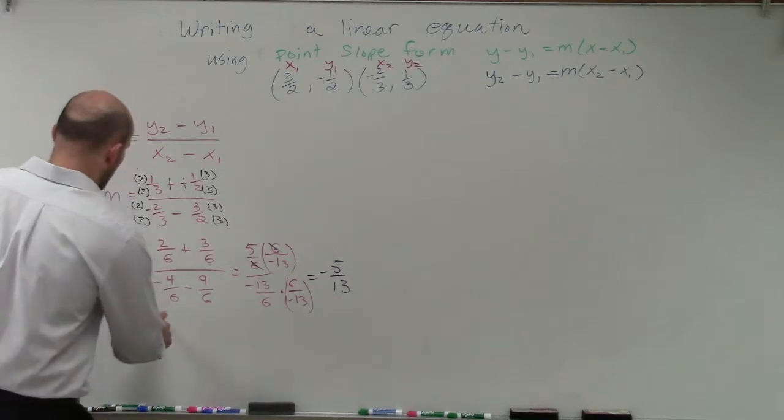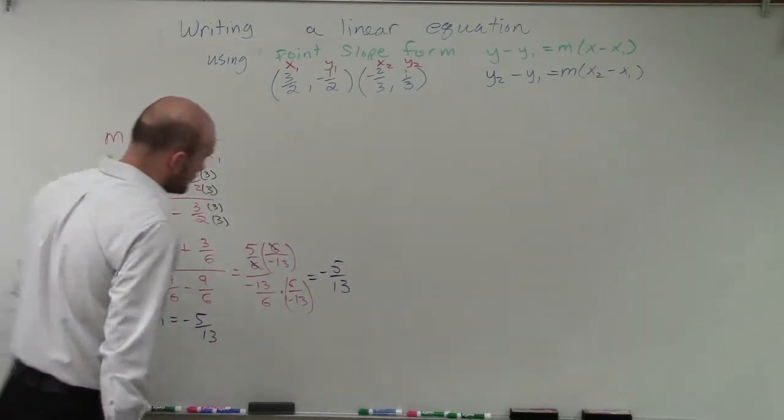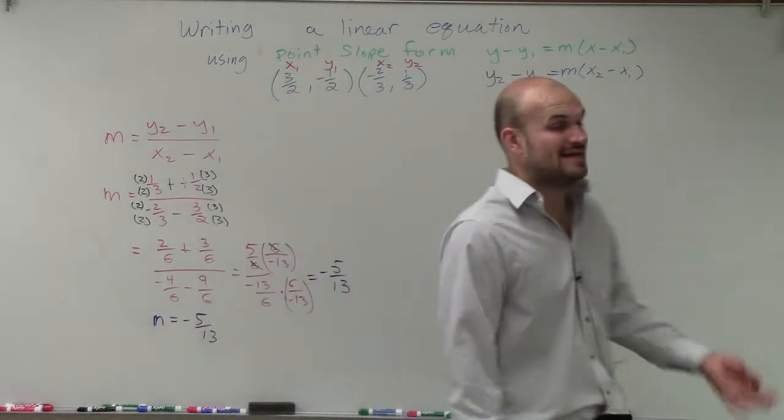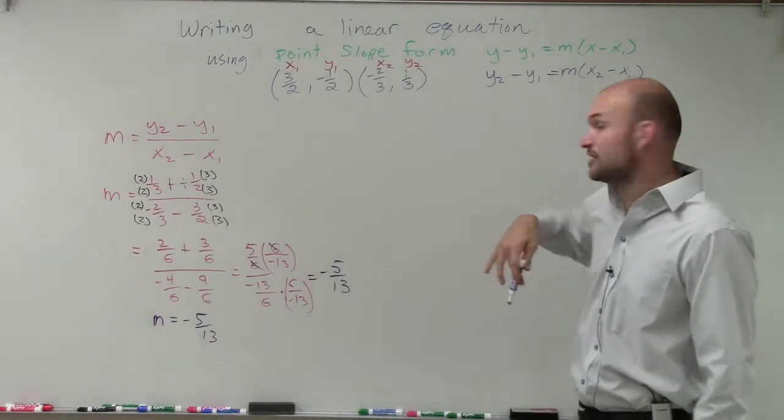And that's going to be helpful. So now we know our slope m equals negative 5 over 13. So now, since we know that slope, all we need to do is just pick one of these points to plug in to be able to find our equation.